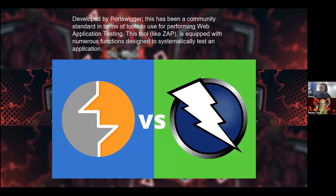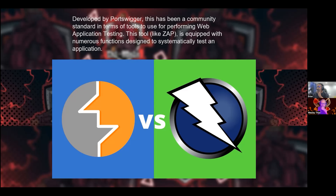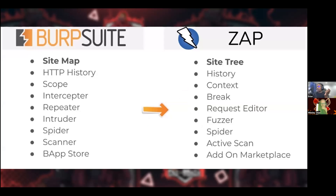We're going to look at two major proxies: Burp Suite (community or professional) and ZAP, which is open source. Both are essentially the same. The feature equivalents are: site map becomes site tree, the repeater is replaced by the request editor, Burp Intruder is replaced by the fuzzer in ZAP, and spiders are identical.